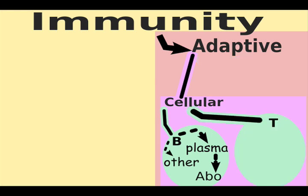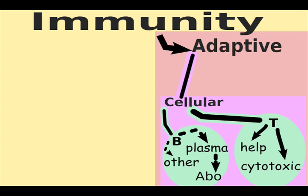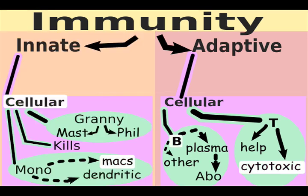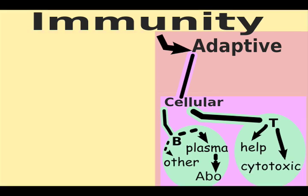T cells are divided into cytotoxic T cells and helper T cells. Cytotoxic T cells actually kill bad cells. Helper T cells help other cells do their immuno jobs. If you have bad helper T cells, like in AIDS, you'll have immune problems.